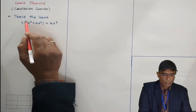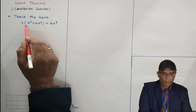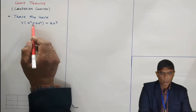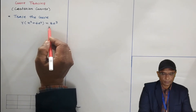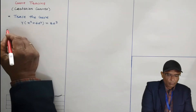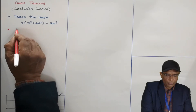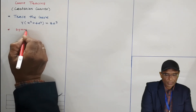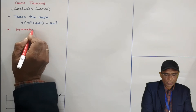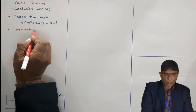Now, when the equation of a curve is given, we can test the curve. The curve given is y(x² + 4a²) = 8a³. First of all, we need to check the symmetry of this curve — whether it is symmetric about the x-axis or y-axis.